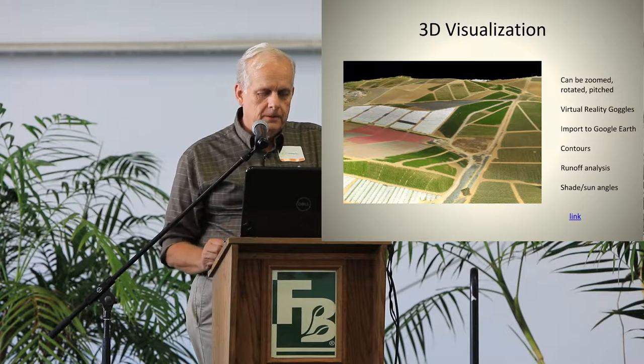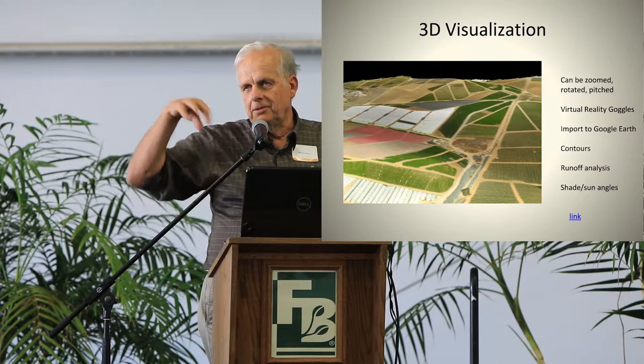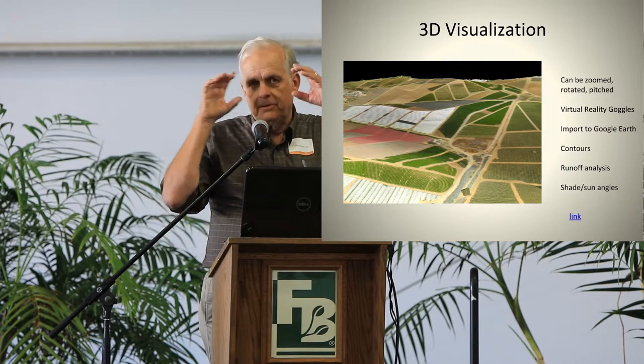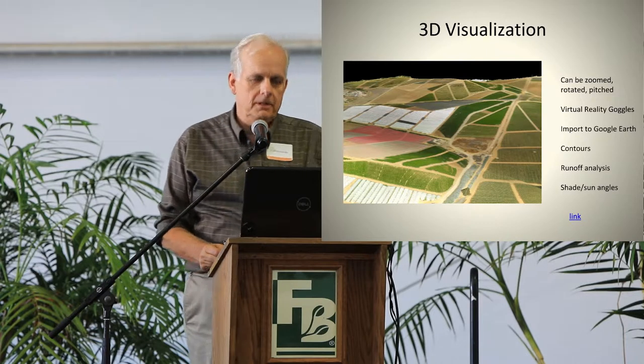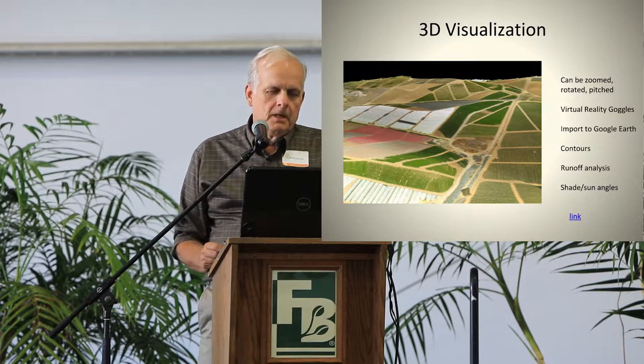The three-dimensional visualization generates a virtual reality view — something like what you might see in Google Earth. Unfortunately I can't get online here to demonstrate it. But it would allow you to zoom around and view the field from many different angles, seeing sun angles, building shadows, and so on. You could zoom in and out and rotate the model. It's not geo-referenced — it just floats in space so you can spin it around.